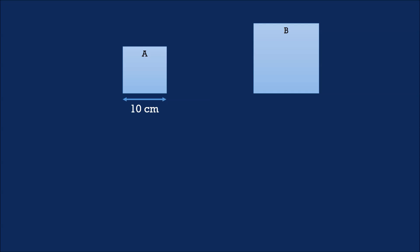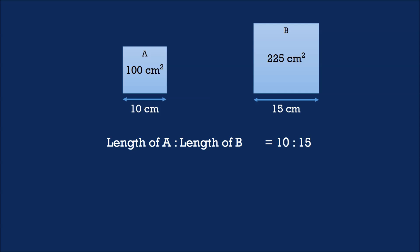Suppose that square A has a length of 10cm and square B has a length of 15cm. Square A would have an area of 100cm squared, and square B would have an area of 225cm squared. Taking the ratio of the length of A to the length of B gives us 10 is to 15, which simplifies to 2 is to 3.